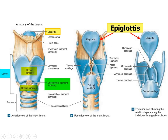The cricoid is thin anteriorly and broad posteriorly, just like a ring worn on a finger. It is joined to the thyroid cartilage by the cricothyroid ligament, and posteriorly it is joined to the arytenoid cartilage by the cricoarytenoid ligament.